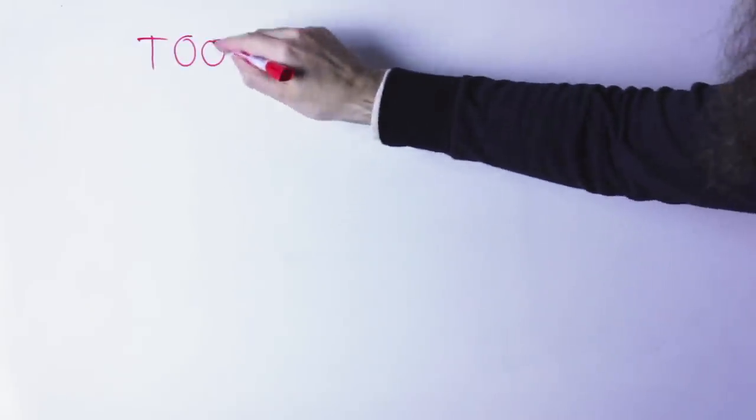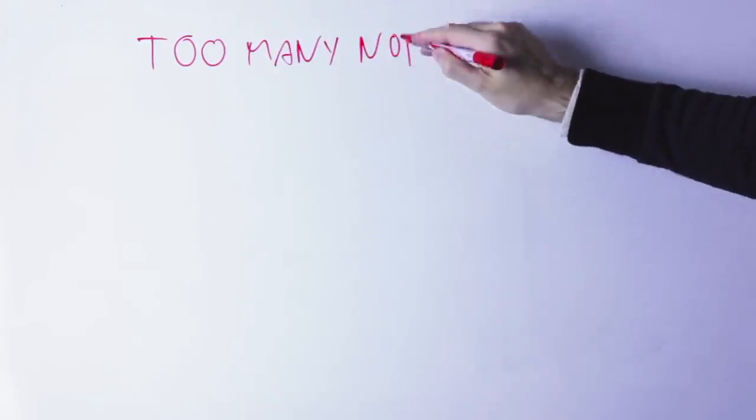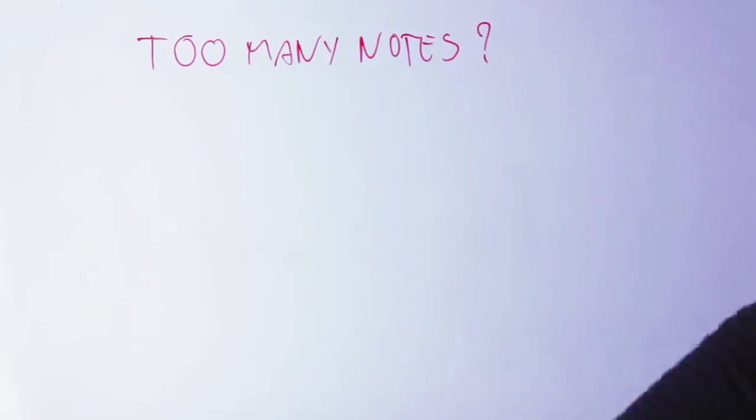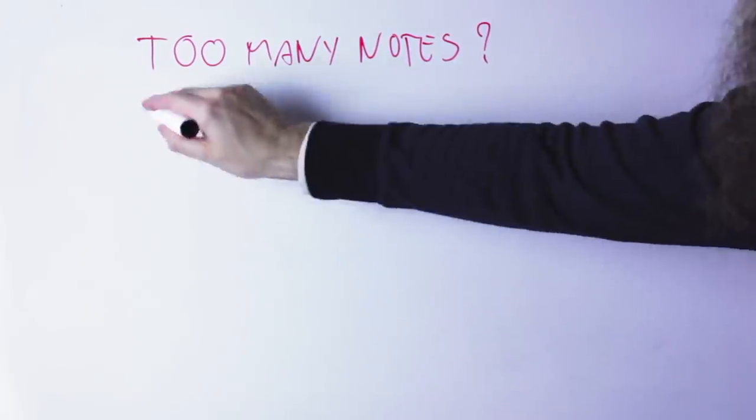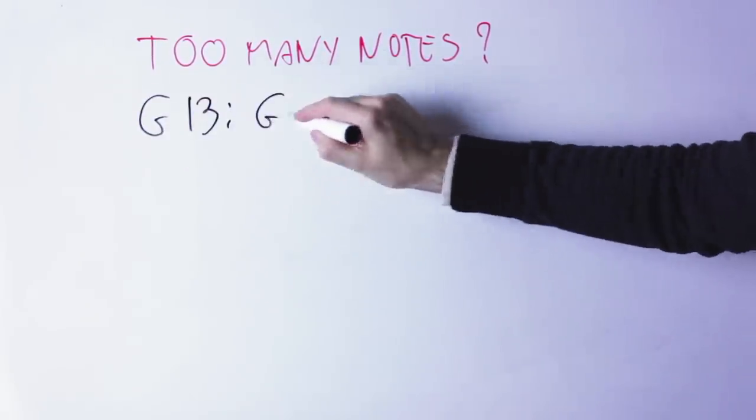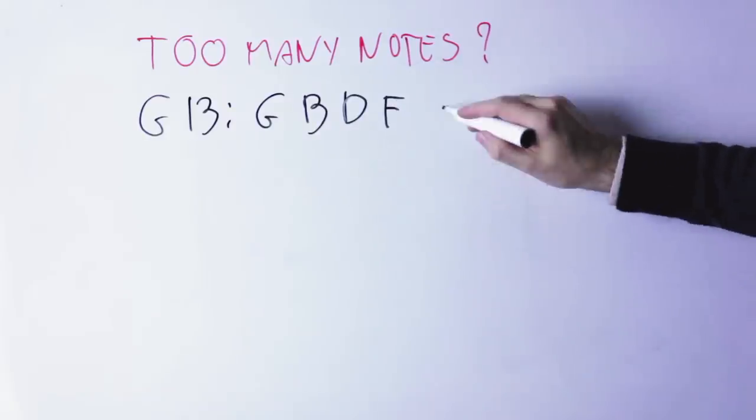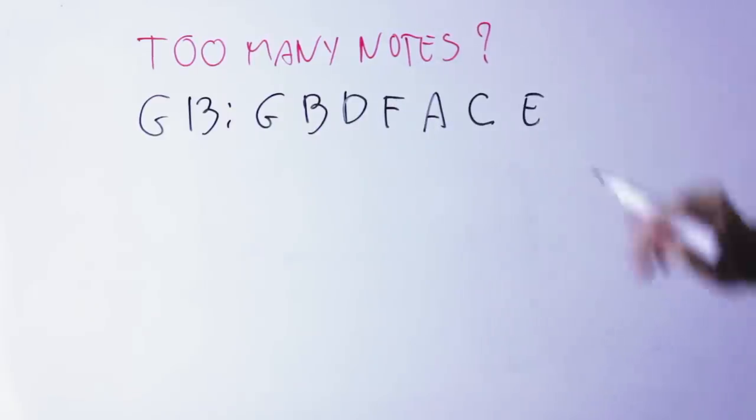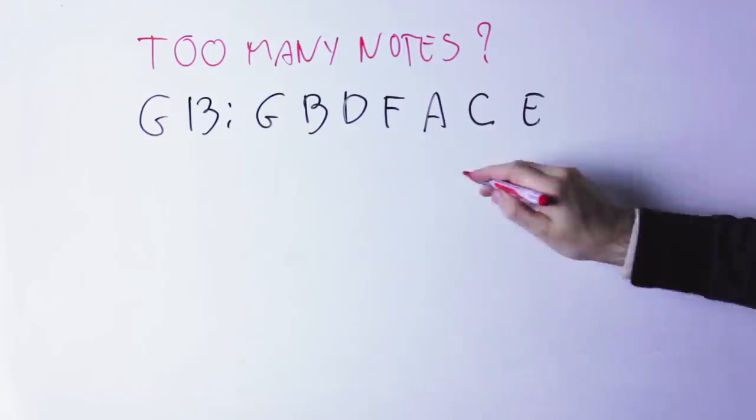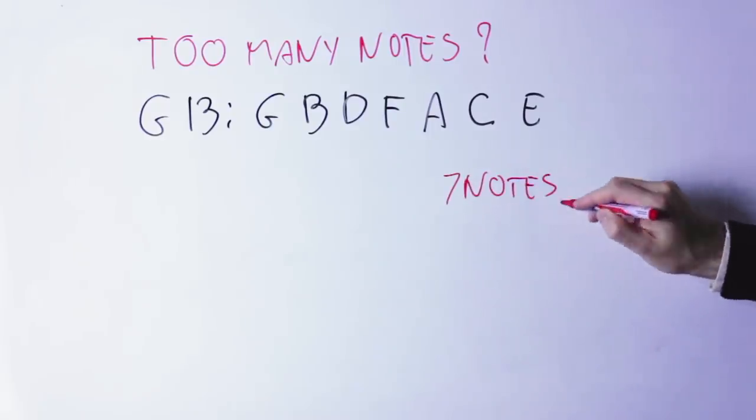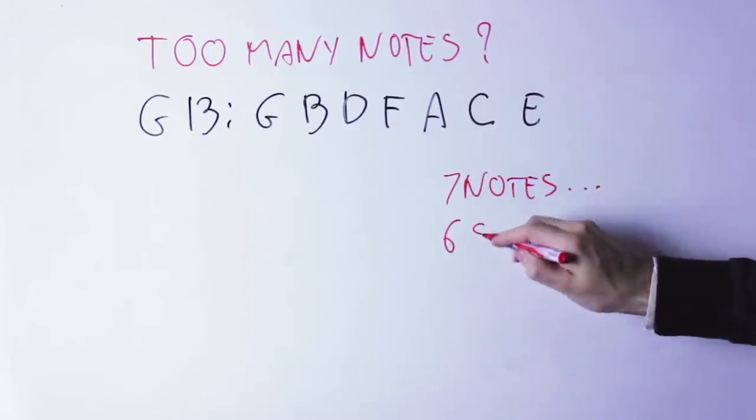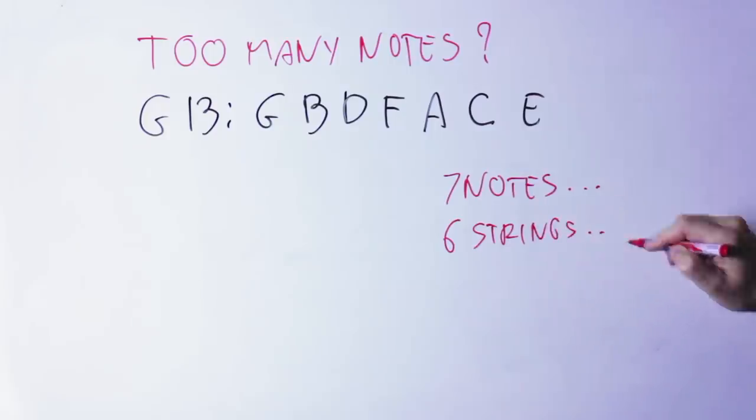Now, the problem for us guitar players happen when you have chords like the G13 we've seen before. Again, G13 contains the notes G, B, D, F, A, C, E. In fact, it contains all the notes of the C major scale played all together. Those are seven notes and most of us have only a six-string guitar,